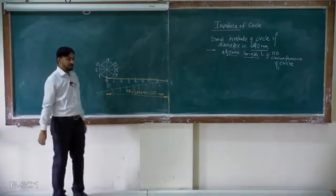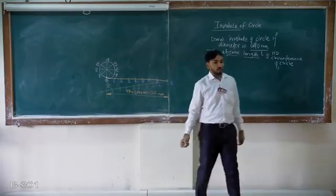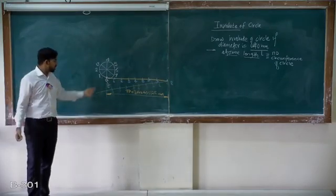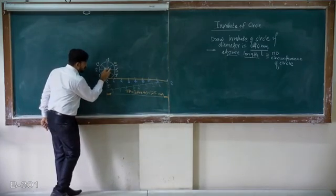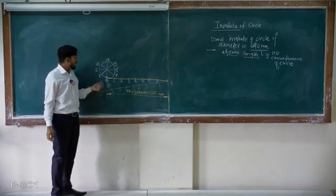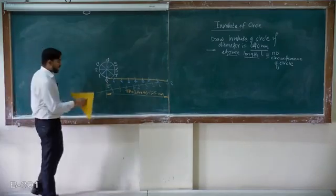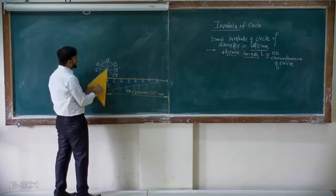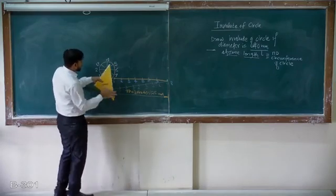Since this is the Involute of a circle, meaning winding or unwinding a length of string over a cylinder, the string is always tangential to the curve. So I need to draw a tangent at every point on the circle. From center C to point 1, C to 2, C to 3 — for all these radii I need to draw a tangent. I'll use a set square or drafter to draw perpendicular lines, keeping one edge parallel to the radius.